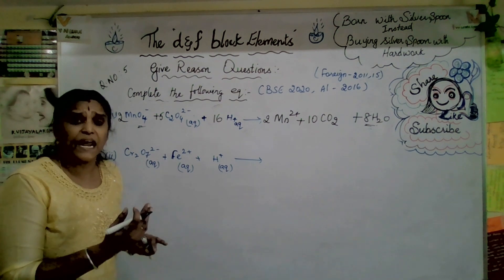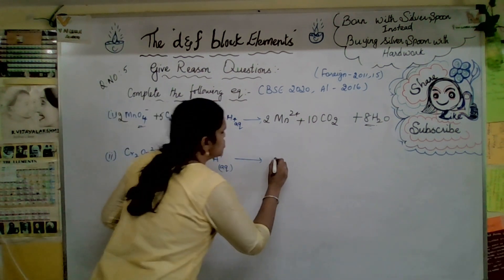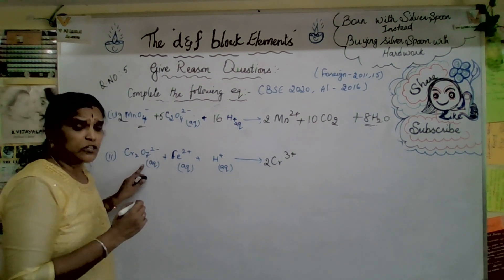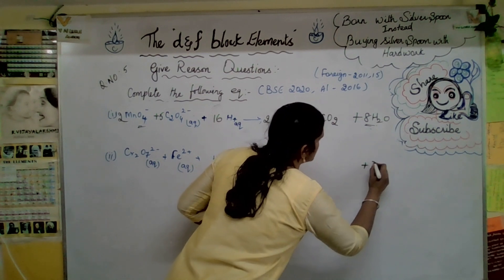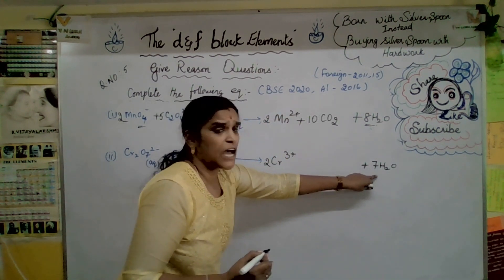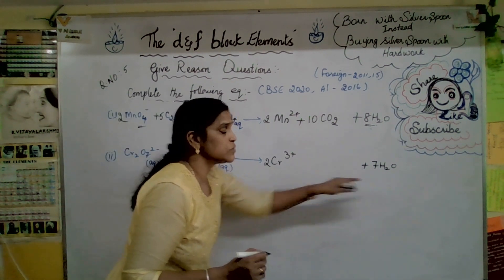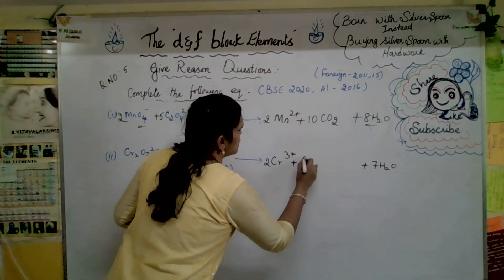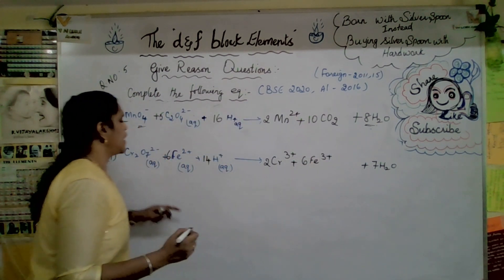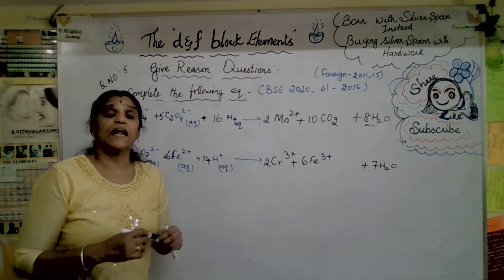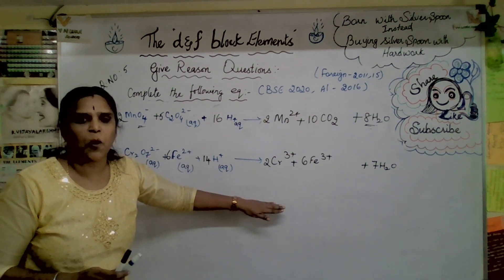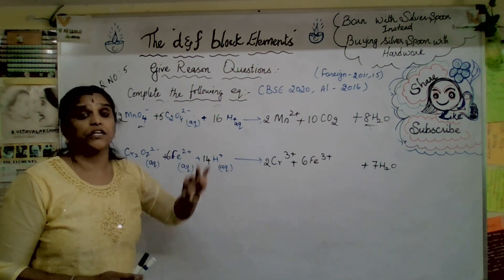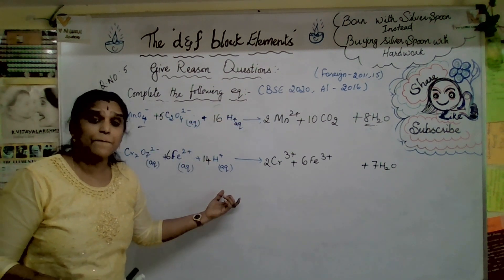The next equation: Cr₂O₇²⁻ + Fe²⁺ + H⁺. Here six electrons are involved, giving Cr³⁺. Six electrons means 2×3=6, so we write 7H₂O and 14H⁺ ions on the left-hand side, and six Fe³⁺ on the right-hand side. Please watch the previous video on redox reactions for complete clarity on all these tricks and tips. These three more equation types are the most important questions you can expect.